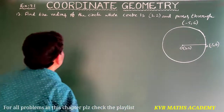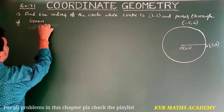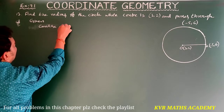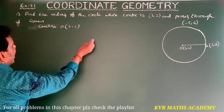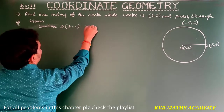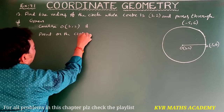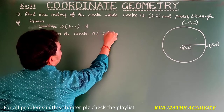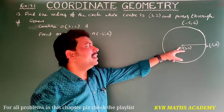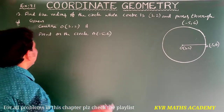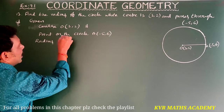Solution: given center O is (3, 2) and the point on the circle A is (-5, 6). We have to find the distance between these two points, which means we need to find the radius. Radius is equal to OA.